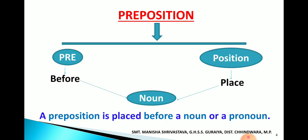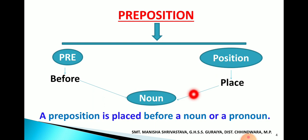Preposition is made up of two words: 'pre' and 'position'. The meaning of 'pre' is before — मतलब पहले. 'Position' means place — या स्थिती. तो ऐसा word जो noun के पहले अपनी position लेता हो, और अन्य words के साथ sentence में noun की संबन्द को बताता हो, वो कहलाता है preposition — pre plus position. A preposition is placed before a noun or a pronoun.